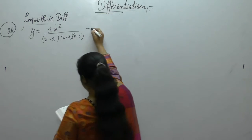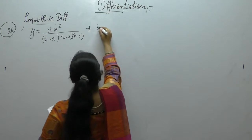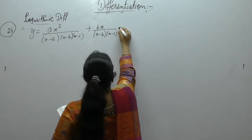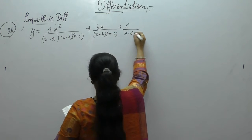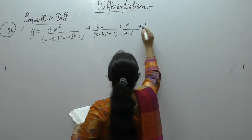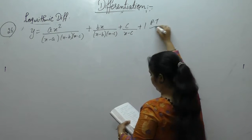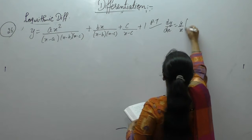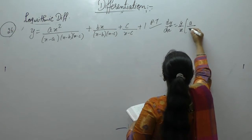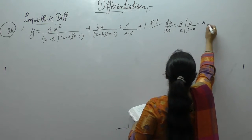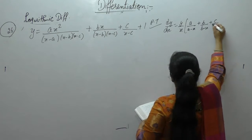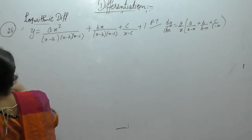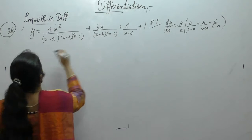We have y = [a/(x-a)(x-b)(x-c)] + [bx/(x-b)(x-c)] + [c/(x-c)] + 1. We need to prove that dy/dx = y · [a/(a-x) + b/(b-x) + c/(c-x)]. First, simplify this expression.